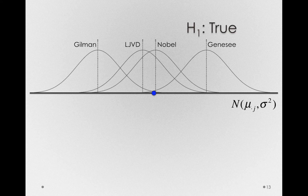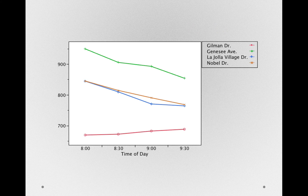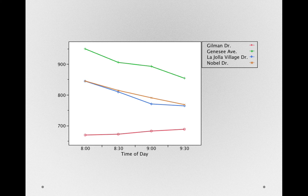When we have models that involve multiple factors, like we saw when we had the 4x4 example crossing time of day with route, we also are in the same situation where we assume, in the population, the distribution of error is homogeneous. Now it's a little bit more difficult to represent this, so we have to switch things around.